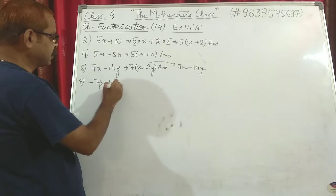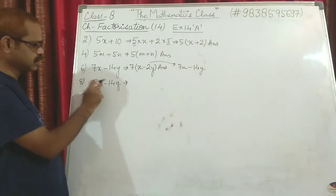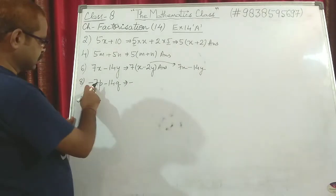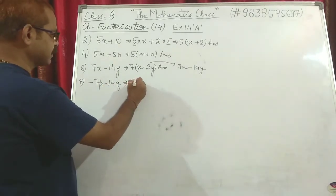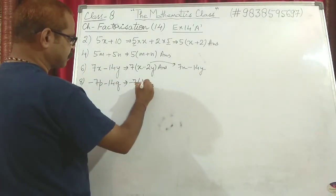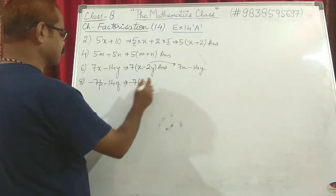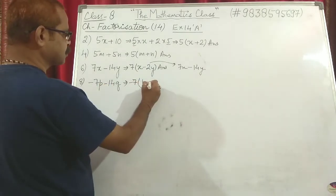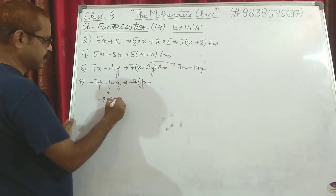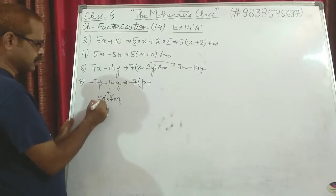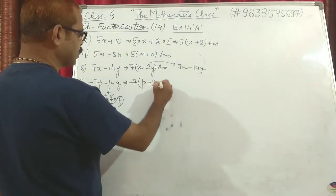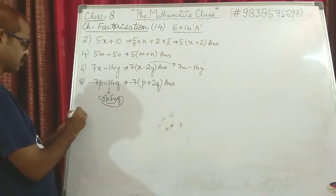Question 8: −7p − 14q. Both terms are negative, so we can take minus common. Also 7 and 14 share a factor of 7, so we take −7 common. When −7 is outside, what is inside will be positive. What is left? p. This was also minus, so it changes to plus: −14q can be written as −2 × 7 × q, so when 7 and minus are taken common, 2q is left as positive. Answer: −7(p + 2q).